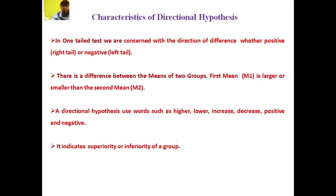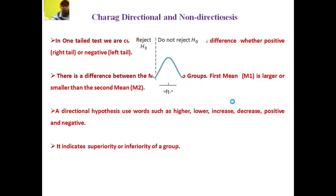Characteristics of directional hypotheses: In a one-tailed test, we are concerned with the direction of difference, whether positive or negative. There is a difference between the means of two groups — the first mean is larger or smaller than the second mean. A directional hypothesis uses words such as higher, lower, increase, decrease, positive, and negative. It indicates the superiority or inferiority of a group.